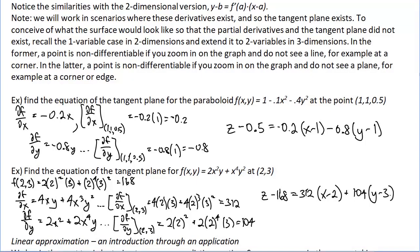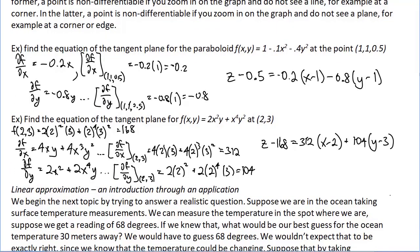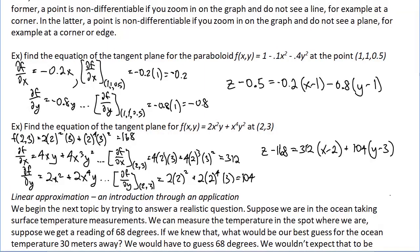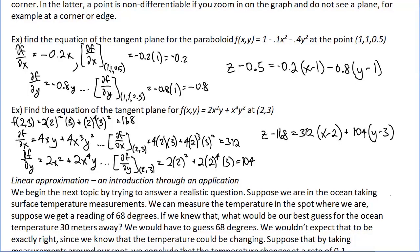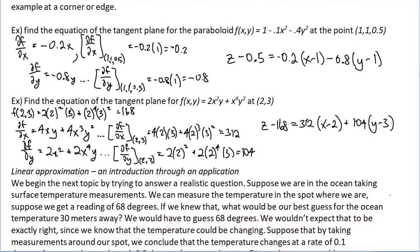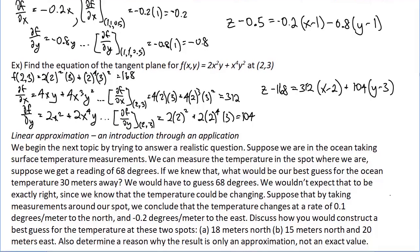Let's think through an application first. Suppose we're in the ocean taking surface temperatures. We measure the temperature at our current spot and get 68 degrees. What would be the best guess for the ocean temperature 30 meters away? Your best guess would have to be 68 degrees — you have no other information. But you wouldn't expect it to be exactly right, as temperature is probably changing.